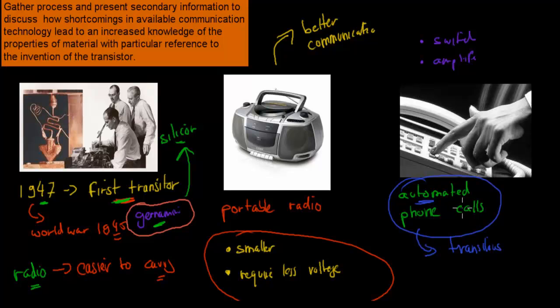This is what this dot point talks about: gather, process, and present secondary information from secondary sources to discuss shortcomings available in communication technologies leading to increased knowledge of properties and materials with particular reference to the invention of the transistor. Because of the need for better communication technologies we increased research funding and focus, so a bigger research focus meant that eventually we had devices which allowed us to make better communication technologies such as portable radios and automated phone calls.